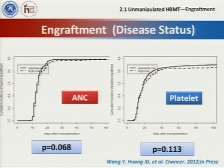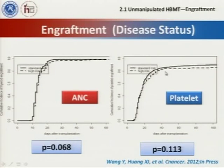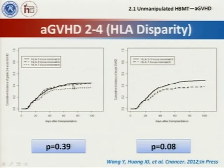I would like to show our recent data on haploidentical transplantation with this GIC protocol — this data has been accepted by the journal Cancer. As shown in this slide, the myeloid engraftment is very good, and platelet engraftment failure is around 19%. The incidence of GVHD was not associated with the degree of HLA mismatch, whether one locus mismatch or three locus mismatch — the incidence of GVHD was similar.